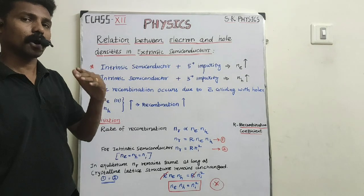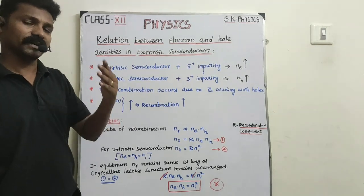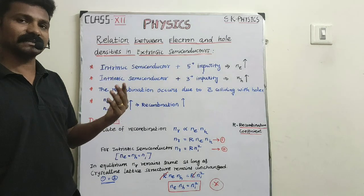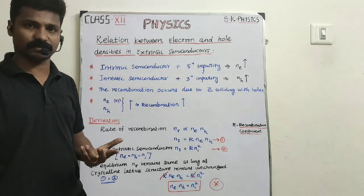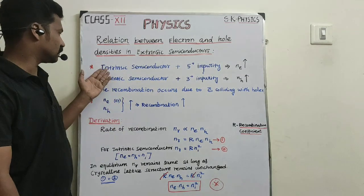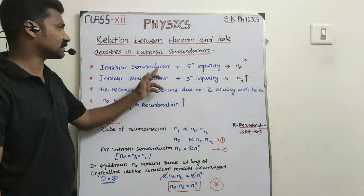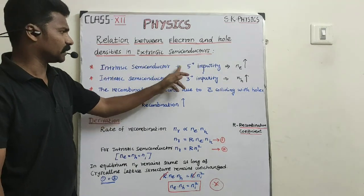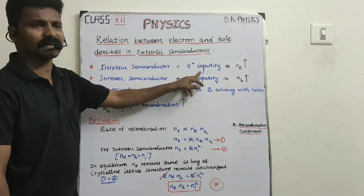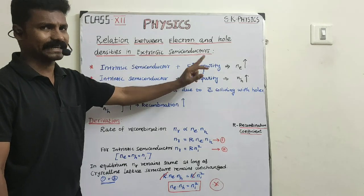Now you know how we can get extrinsic semiconductors. When impurities are added to intrinsic semiconductors, we get extrinsic semiconductors. So based on that idea, if an intrinsic semiconductor is doped with pentavalent impurity, we can get n-type semiconductor.